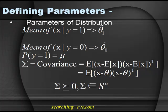The covariance is defined as the expected value of (x minus E[x]) times (x minus E[x]) transpose. If the expected value of x is theta, this gives us the covariance matrix, which will be clear in the upcoming slides. A requirement for a covariance matrix is that it must be symmetric and positive semi-definite.